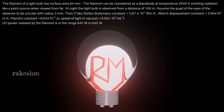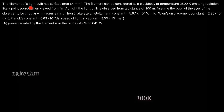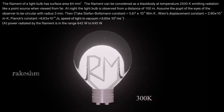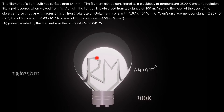Good morning dear students. Let us take a look at this question from JEE Advanced 2020 from the heat transfer chapter. The filament of a light bulb has surface area 64 millimeter square. You can see the filament in this bulb, and this filament area is 64 millimeter square. The filament can be considered as a black body at temperature 2500 Kelvin. Right now the filament is at 300 Kelvin, which is room temperature.